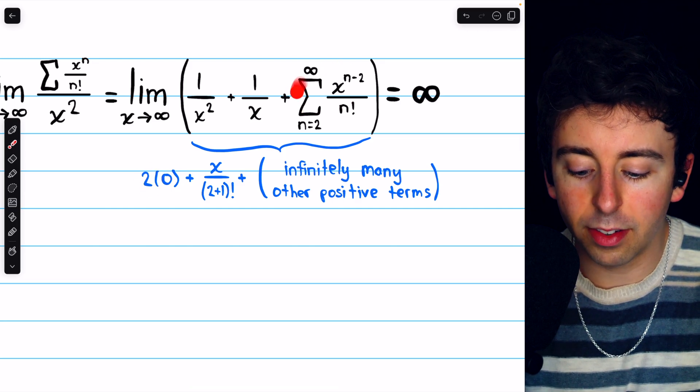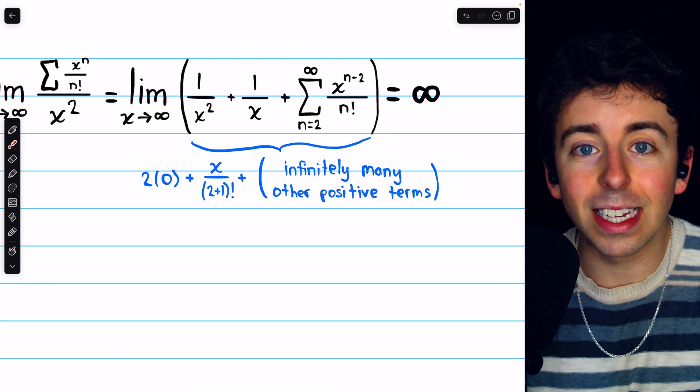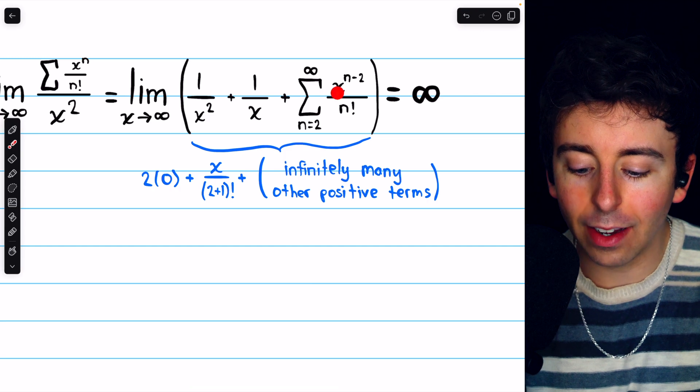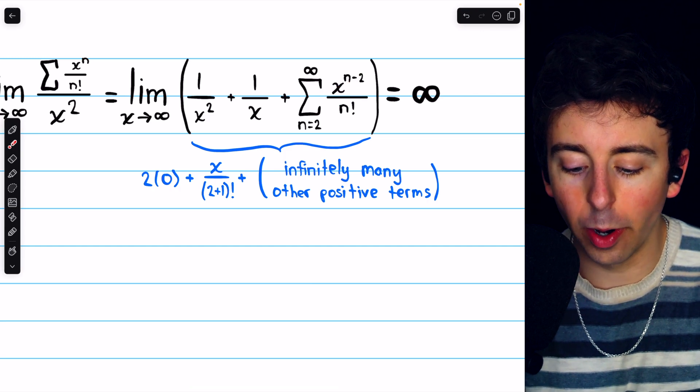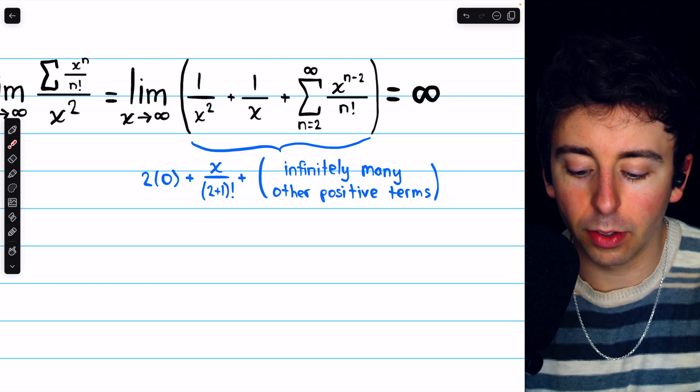Then the first term of this series is just 1 over 2. But if we consider the next term, when n equals 3, we would have x to the power of 1 divided by 3 factorial, which looks like this, x divided by 2 plus 1 factorial.